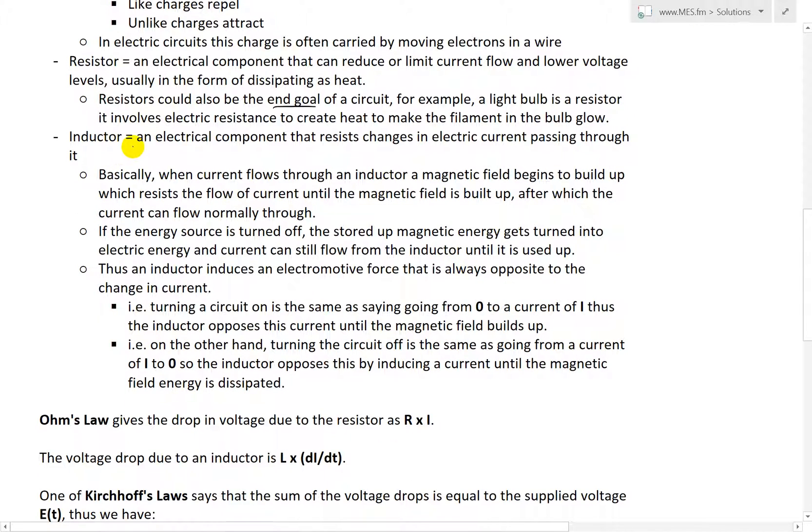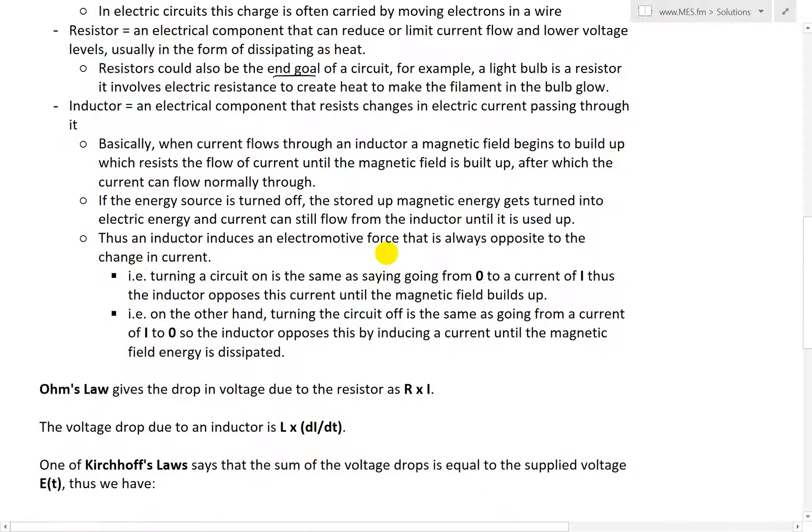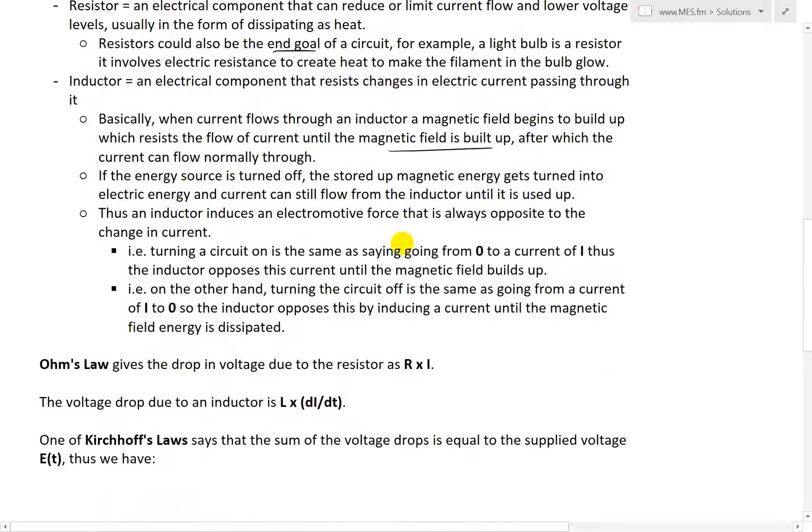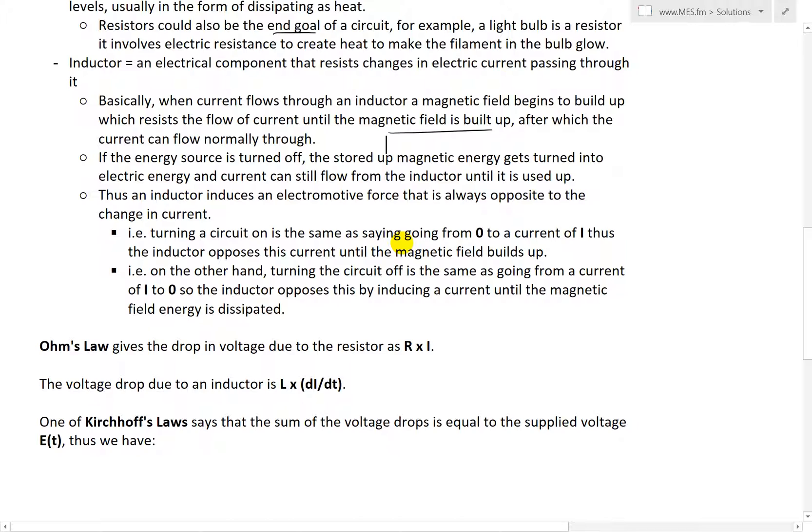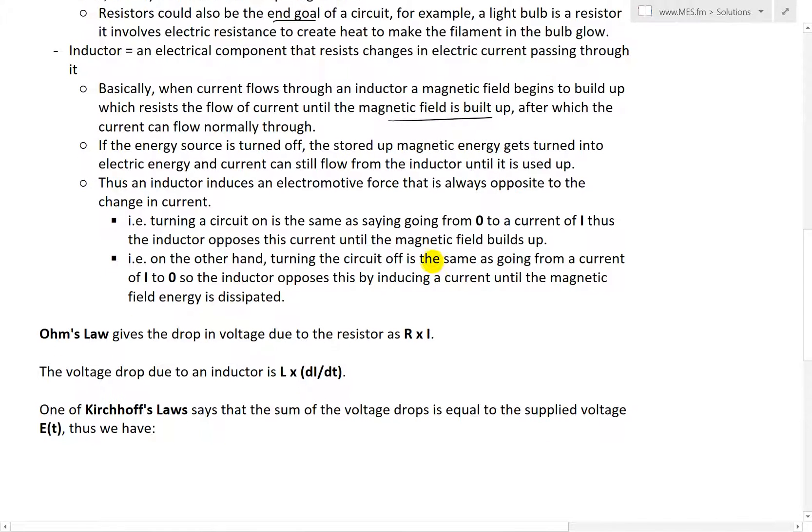An inductor is different than the resistor. Basically, an inductor is an electric component that resists changes in electric current passing through it. When current flows through an inductor, a magnetic field builds up which resists the flow of current until the magnetic field is fully built up, after which the current flows normally. It's usually just a coil of wire.